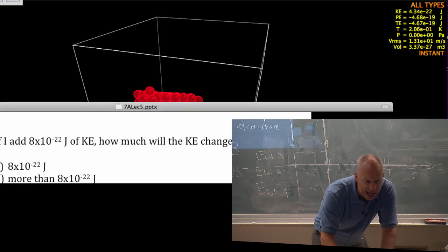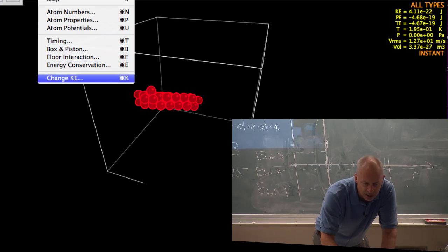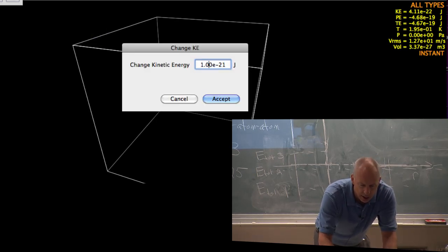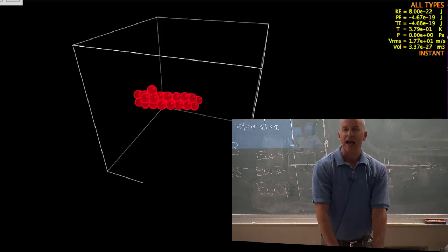So how much are we going to add? I'm going to add 8×10^-22. Right now the kinetic energy oscillates between about three and four.